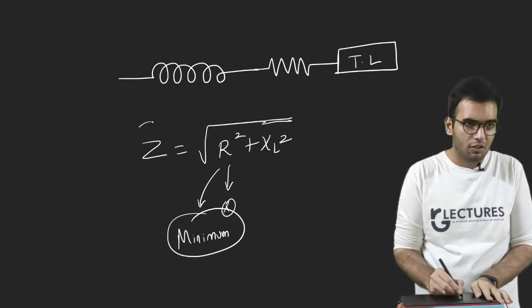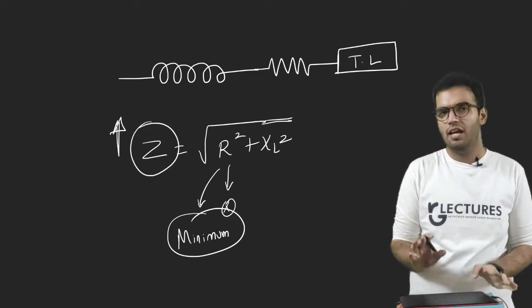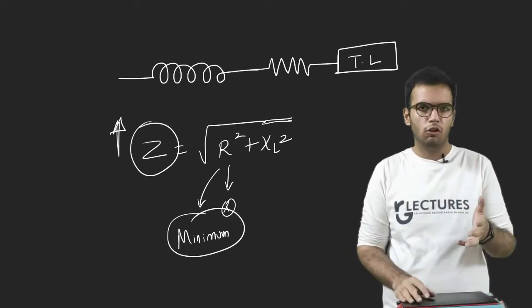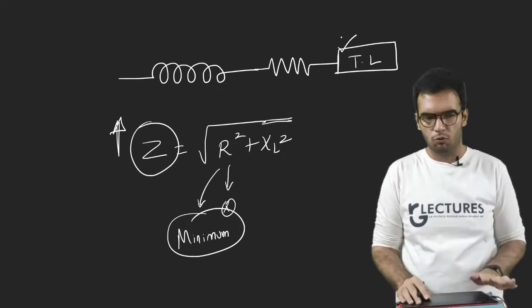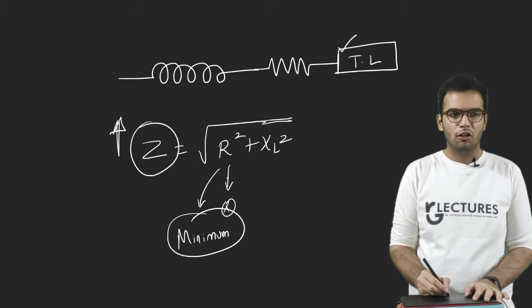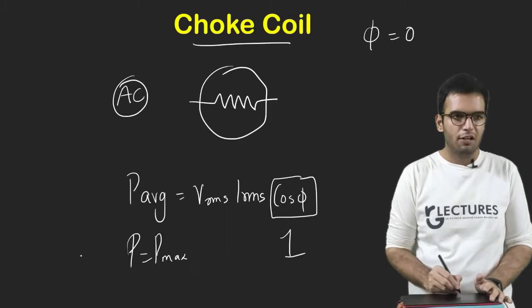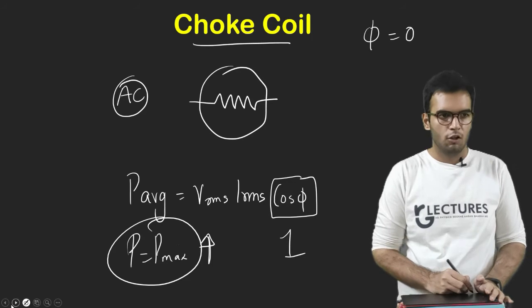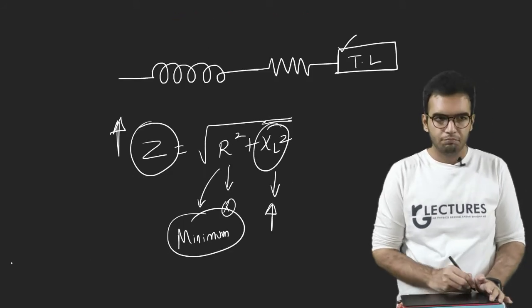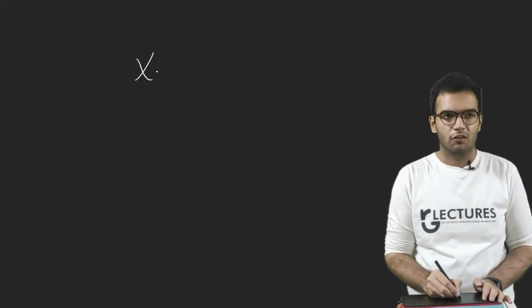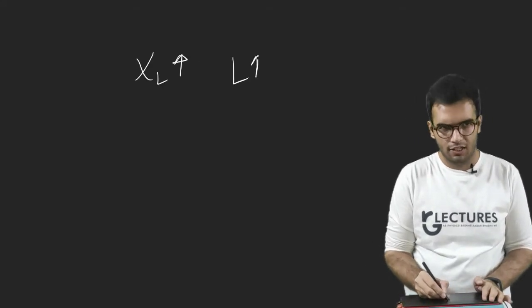But at the same time I want Z to be increased, because ultimately I want some opposition to be offered by the tube light to the AC source. But now I cannot increase the R because if I increase the R, my power consumption will increase. So what can I increase? I can increase the XL, I can increase the inductance.